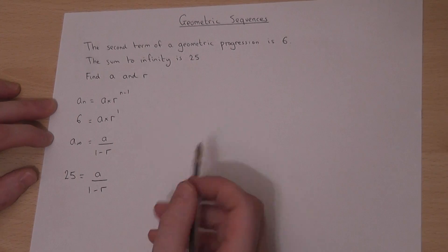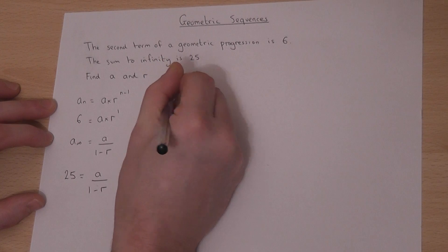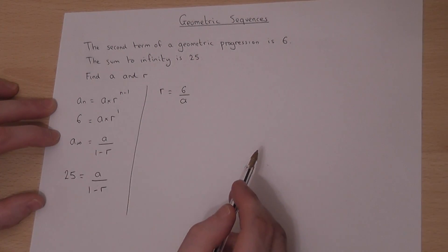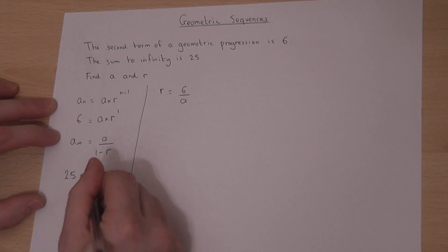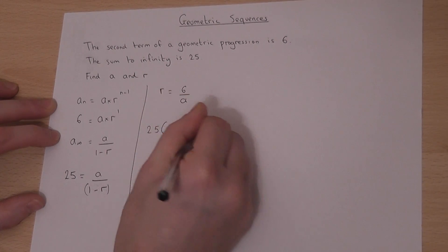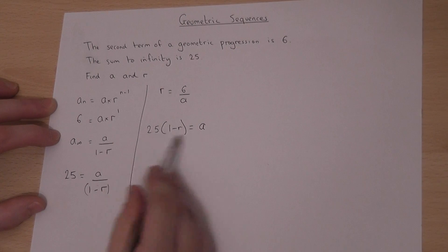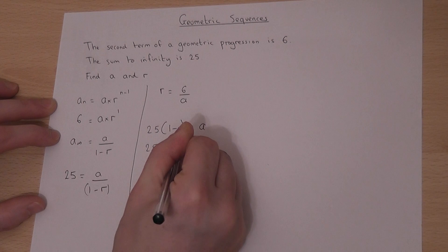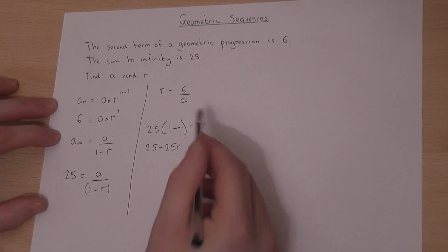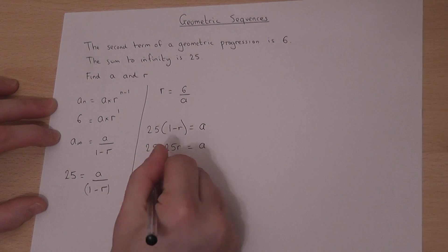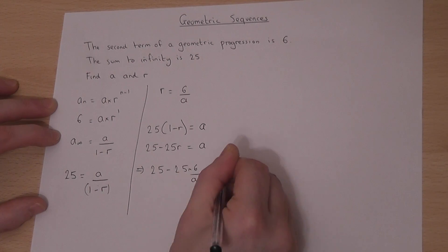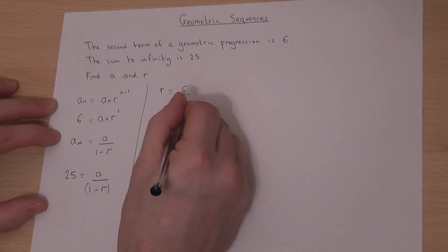In the first equation, if I rearrange, r equals 6 over a. For the second equation, I'm going to multiply up by 1 minus r, so I get 25 times (1 minus r) equals a. Expanding this gives 25 minus 25r equals a. I can then replace r in this equation with 6 over a, so 25 minus 25 times (6 over a) equals a.